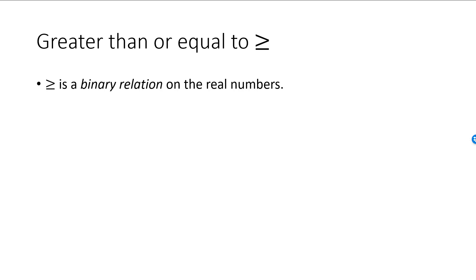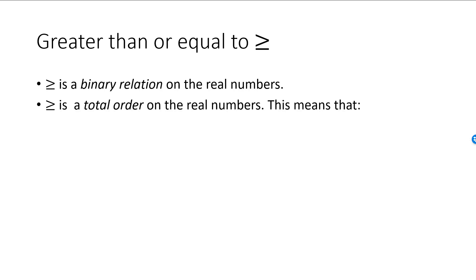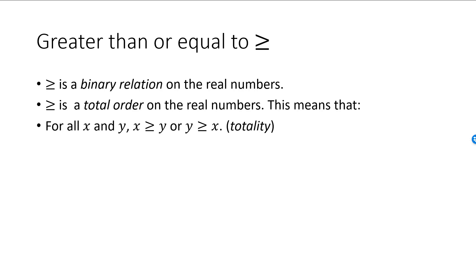Now some binary relations are a total order and some are not. We will see that greater than or equal to is a total order while greater than is not. A binary relation which is a total order will satisfy four conditions. The first one is totality. Greater than or equal to satisfies this condition because for any two real numbers x and y, it will always be the case that x is greater than or equal to y, or y is greater than or equal to x, or both.